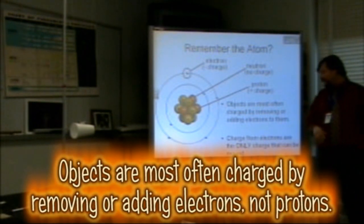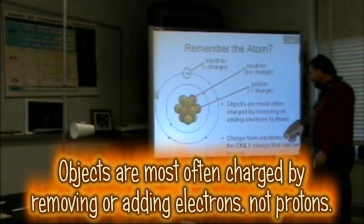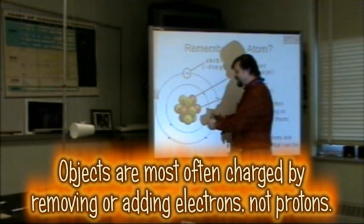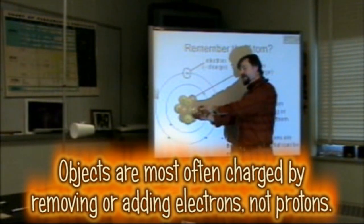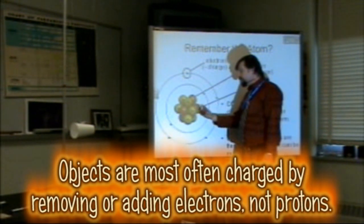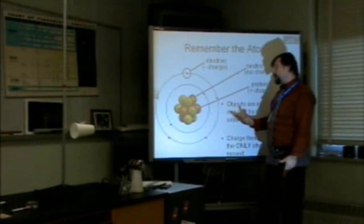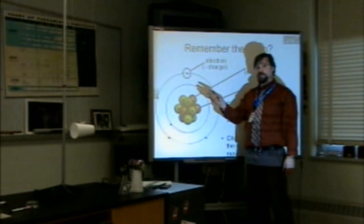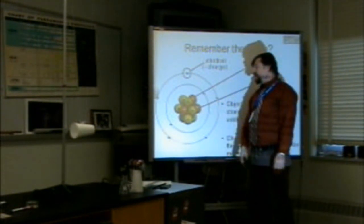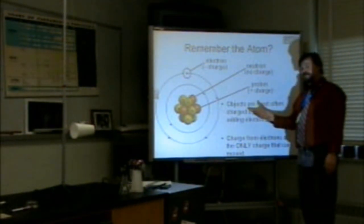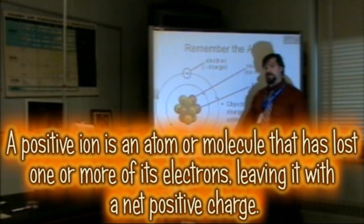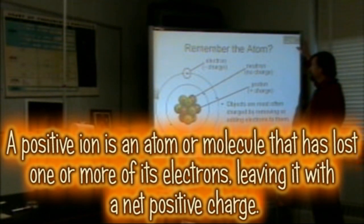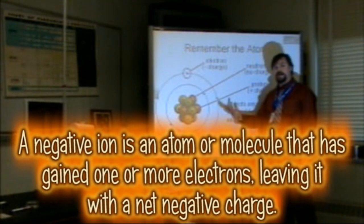Objects are most often charged by removing or adding electrons to them. Charge from electrons is the only charge that can be moved — protons are nice and tight in the nucleus and are not being taken in and out of the nucleus. In classroom labs, electrons are able to move back and forth from one object to another, creating a negative electrical charge, and leaving a positive electrical charge — a surplus of protons if you take away an electron, or a surplus of electrons if you're adding electrons.